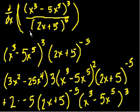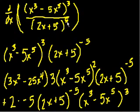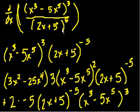Even though you hadn't seen something like this — where you had a numerator and denominator — you can easily rewrite what you had in the denominator as a negative exponent, and then it's just the product rule. You don't have to memorize that silly thing called the quotient rule.